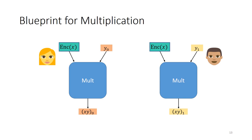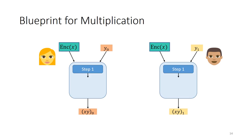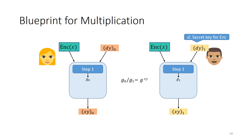Now I'm going to focus on the multiplication protocol, which is the most complex part of the HSS construction. We have two values x and y we want to multiply: x is an input wire given in encrypted form, and y is a memory value for which we have an additive secret sharing. The parties do some kind of distributed decryption and multiplication step, which ends up with them getting multiplicative shares of the product x times y. This comes in the form of group elements g0 and g1, where g0 times the inverse of g1 equals g to the xy for some fixed group element g. Since there's decryption of the ciphertext involved, we need the secret key, so the parties actually get additive shares of d times y where d is the secret key.